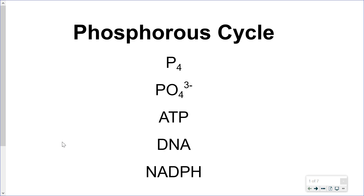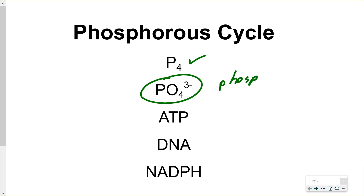This first slide is showing various different chemical forms of phosphorus. The first one is P4, which is really not that active a form in biological organisms. The one that is taken up and used by plants and animals is this second one here — this is phosphate, the phosphate ion, PO4 3-.